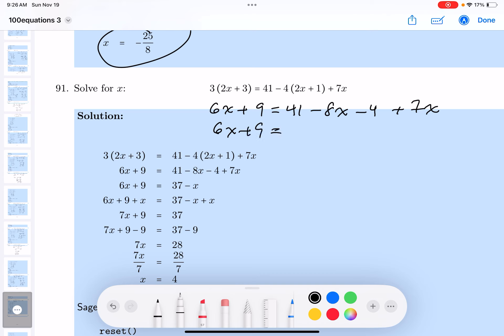Let's see, 41 minus 4 is going to be 37. And then minus 8x plus x is just minus x.